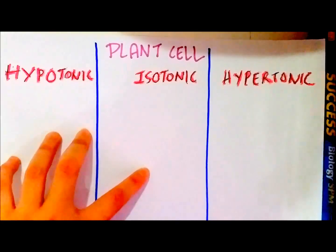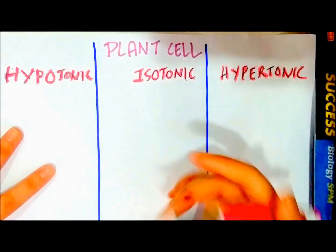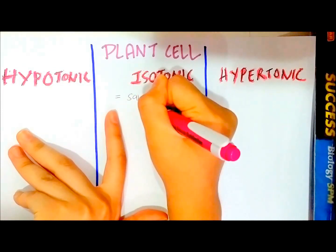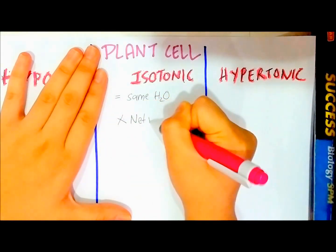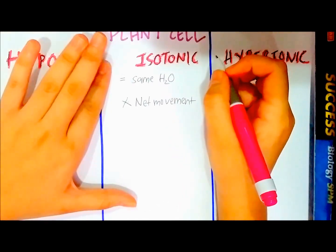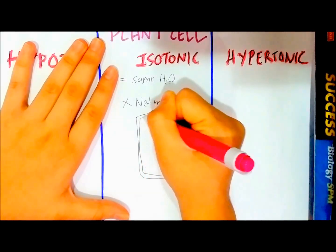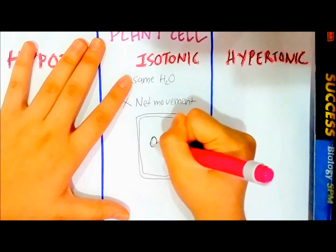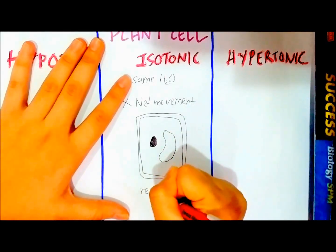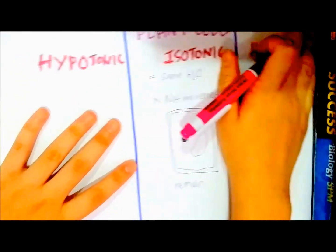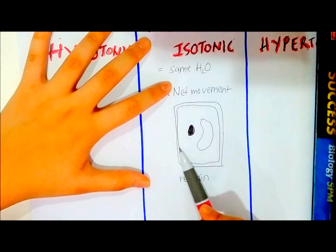Now let's talk about what will happen if a plant cell is immersed in hypotonic, isotonic, or hypertonic solution. If it is immersed in isotonic solution, since it has the same concentration of water molecules as the cytoplasm in the plant cell, there is no net movement of water molecules. Therefore, the plant cell will remain its shape. If immersed in hypotonic solution, water will diffuse from the hypotonic solution into the cytoplasm of the cell.